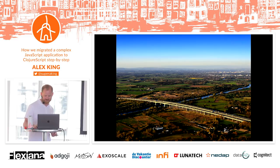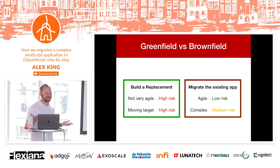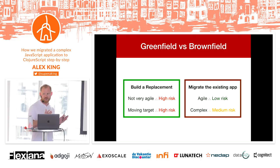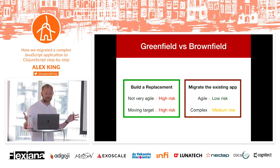So which do we pick — build something new or migrate what we have? You've seen the title of the talk, so you know what we pick. The main reason is the risk we see in working on a brand new project for 9 to 12 months, getting 70 or 80% of the way there, and then priorities change and we have to focus on the current app. Things get out of sync, it gets canned — it's a big risk.